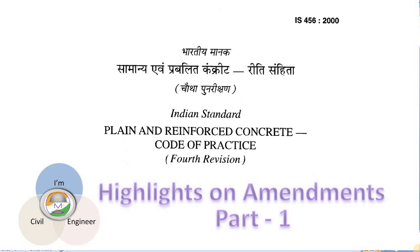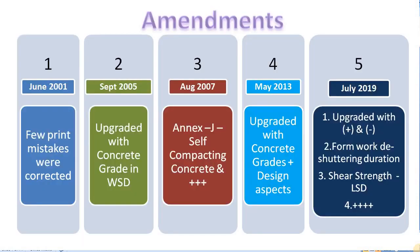Page-wise amendments are discussed in this video. Kindly check the color codes which are followed by this channel throughout the video for amendments made in IS456-2000. Dark blue will represent the amendment 1 made in 2001, green for the 2nd amendment made in 2005, brown for the 3rd amendment in 2007, sky blue for the 4th amendment in 2013, and navy blue for the last amendment made in 2019, which is the 5th amendment.